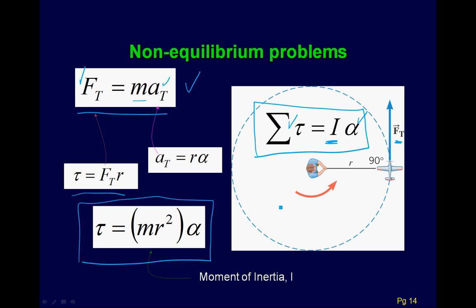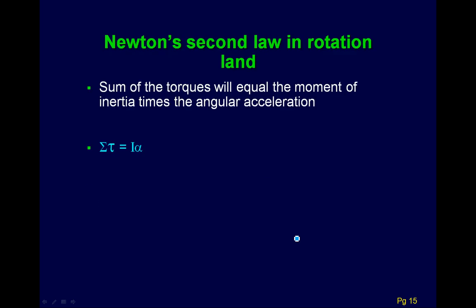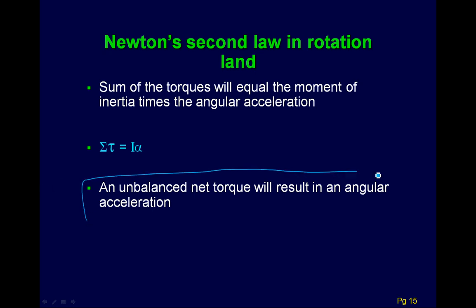And so what happens is if I was to solve for alpha, alpha would equal the net torque divided by I. And so I is what resists the angular acceleration. Torque is what's causing it. Now we can apply this equation very similar to how we did F equals ma. But, of course, with rotations, everything is a little bit trickier. But it's the same idea. An unbalanced net torque will result in an angular acceleration. And before it was an unbalanced net force will result in an acceleration.